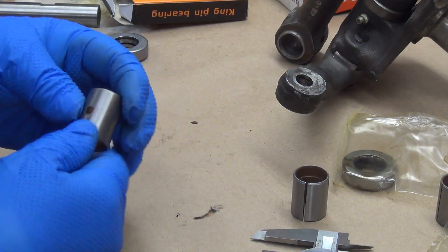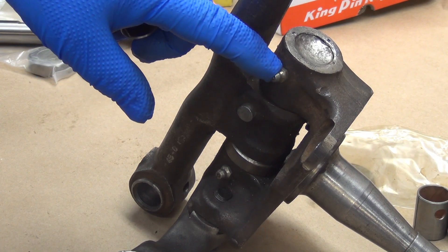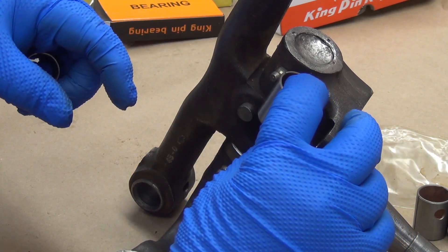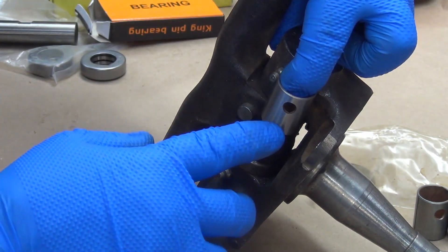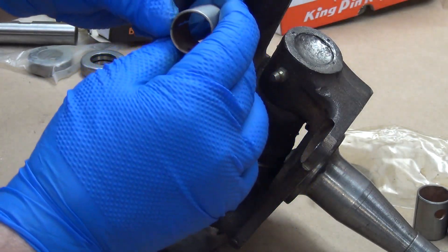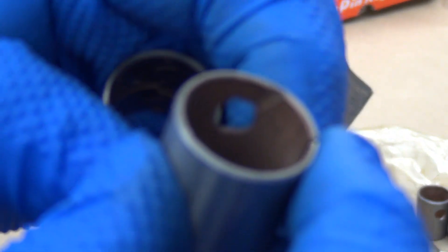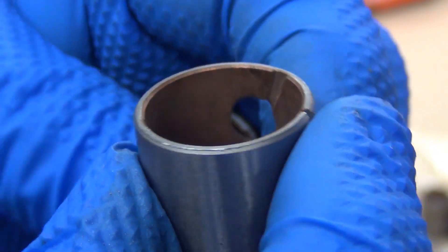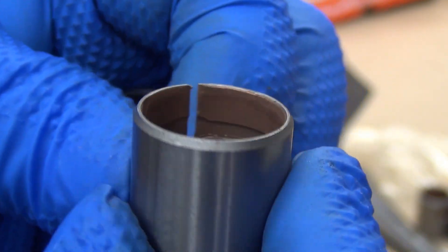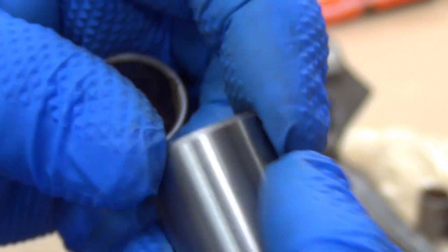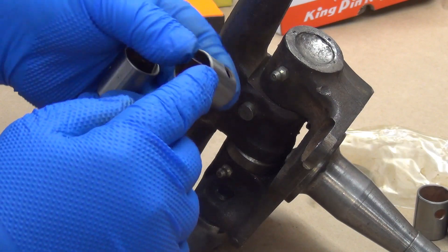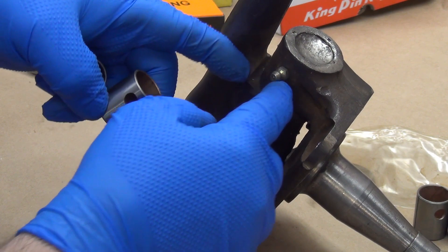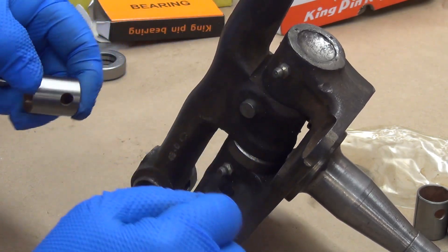Now if you notice, the zerk fitting, the grease fitting here, is not centered top to bottom. That's why the hole in the bushing is not centered top to bottom - it lines up with the hole. The important part is that the hole lines up with one of the grease channels. On most of the other kits, the hole was in the top channel. Here it's in one of the more vertical channels. That lines up with the zerk fitting and allows the grease to pump up into the top here around the pin and down here into the shims.